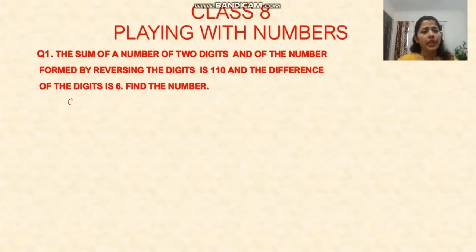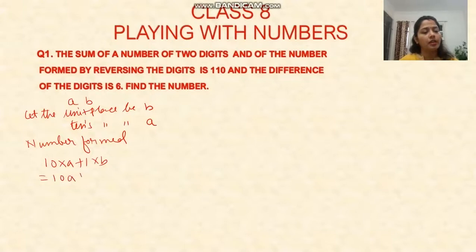Let a and b be the digits. Let the units place be b and let the tens place be a. Now, what will our number be? First, let's find the number. The number formed will be 10a plus b.